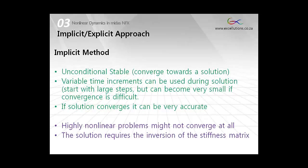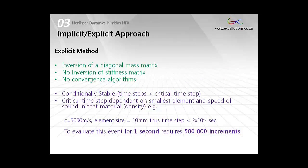Let's look at some pros and cons for the different methods. For the implicit method, it is unconditionally stable. It will always tend to converge towards a solution. Also we have time steps that can be long. We can start with those and it will actually decrease the time steps if it has trouble to converge. And when it converges, we can assume that a high level of accuracy exists. Although for highly nonlinear problems, we might not find convergence at all. And as already shown, the solution requires the inversion of the stiffness matrix.